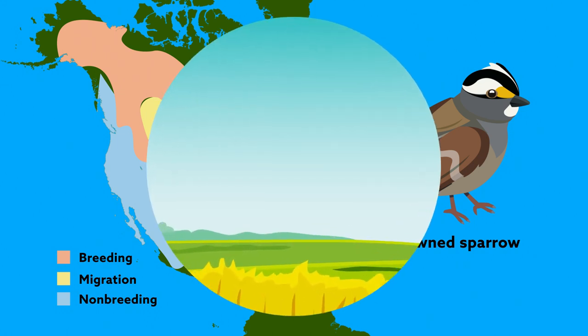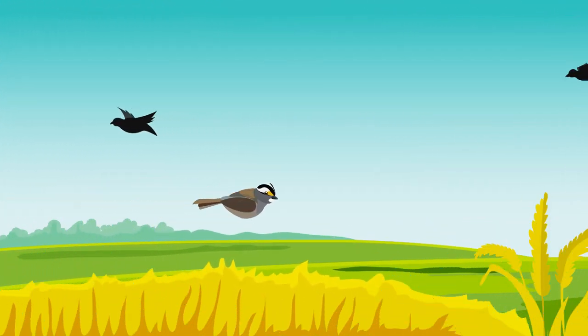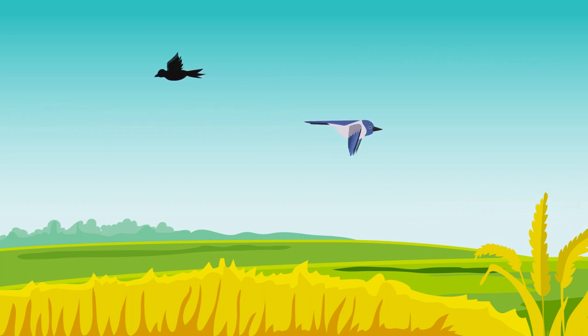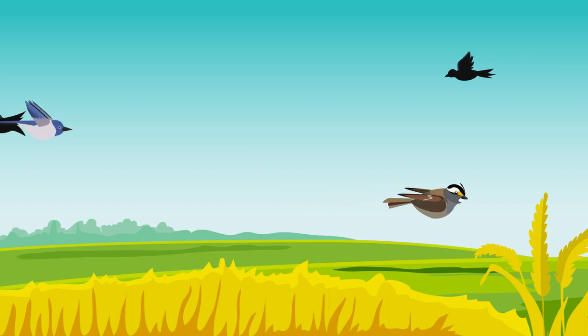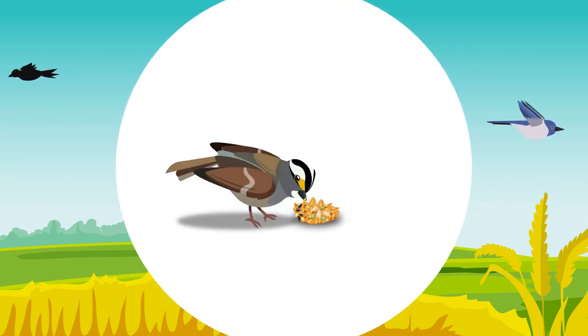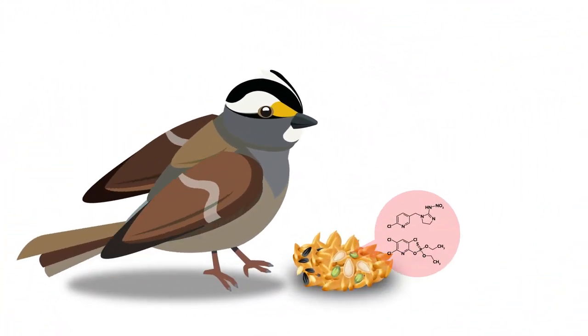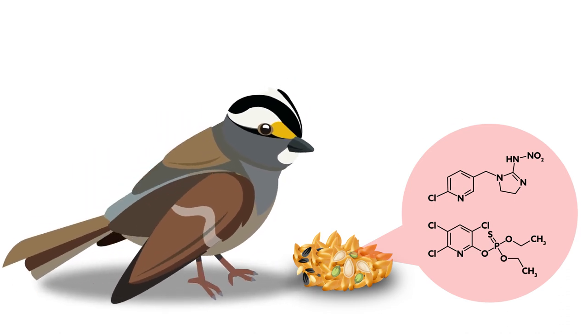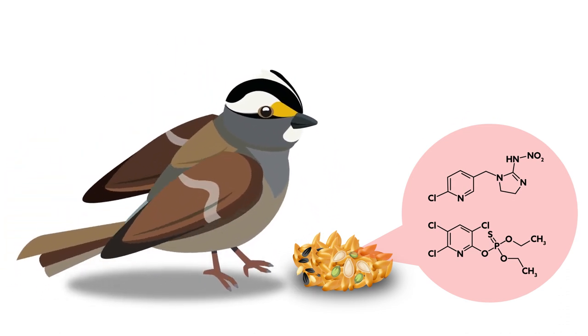Like many other migratory birds, the sparrow relies on the rich farmland in between to rest and refuel. And that's where danger may lie. The seed-eating sparrow could unwittingly be ingesting grains contaminated by neonicotinoid coatings or organophosphate granules posing as food or grit.